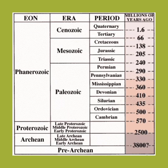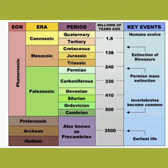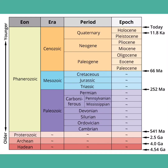The Mesozoic Era is divided into three periods: the Triassic, Jurassic, and the Cretaceous. The Cenozoic Era is also divided into three periods: the Paleogene, Neogene, and the Quaternary.